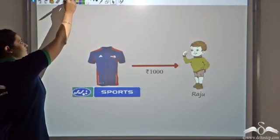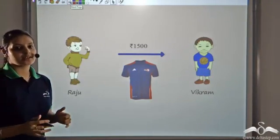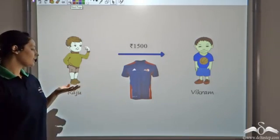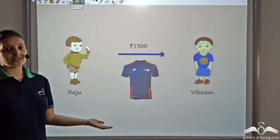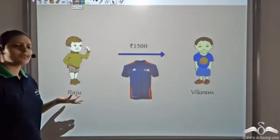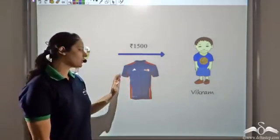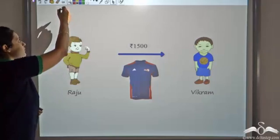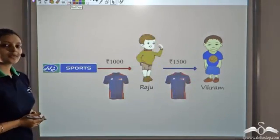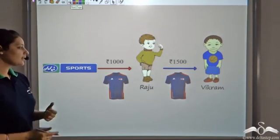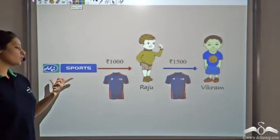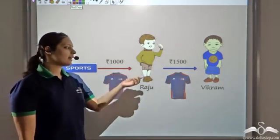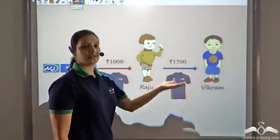Now one of his friends, Vikram, was a big supporter of the Delhi Daredevils team. So he was ready to pay Raju 1500 rupees for the same t-shirt. So Raju decides to give it to Vikram for 1500 rupees. In summary, Raju goes to JJ Sports, buys the t-shirt for 1000 rupees, and sells it to Vikram for 1500 rupees.